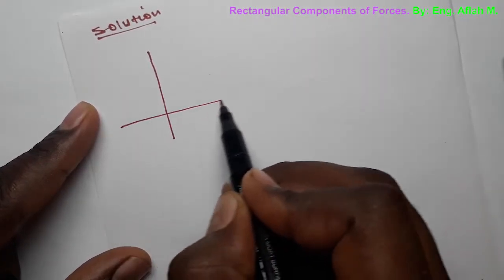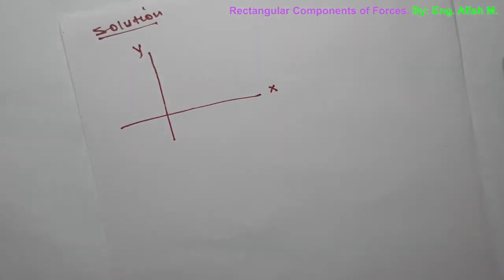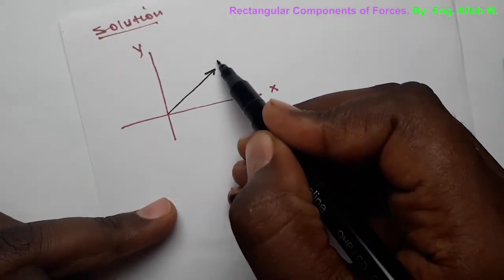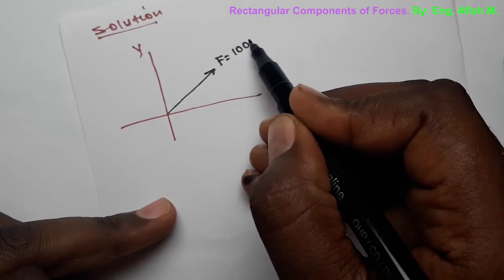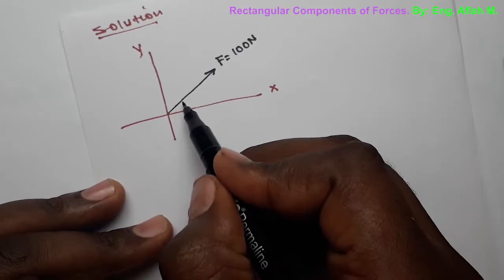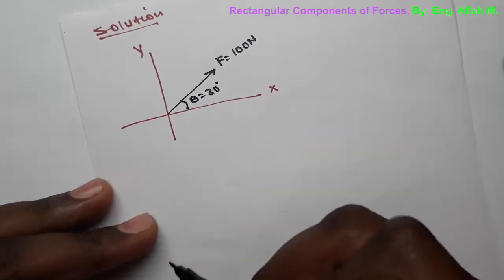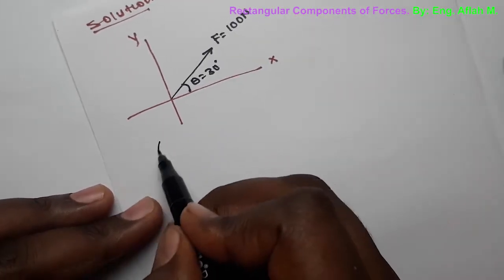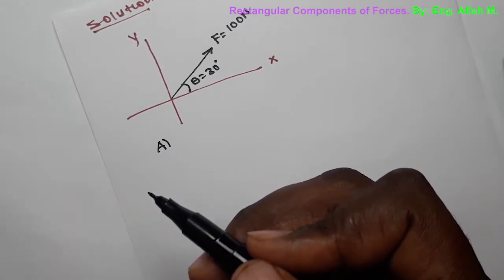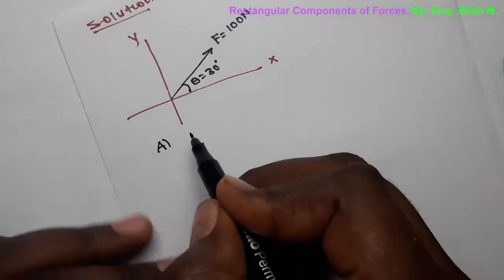Let's draw our XY coordinate system — this is the X and this is the Y. Our force F is acting with F equals 100 Newtons in magnitude, and this force F makes an angle of 30 degrees with the X-axis, so theta equals 30 degrees. In question A, we are asked to determine the X and Y components, or rectangular components, of the force F.